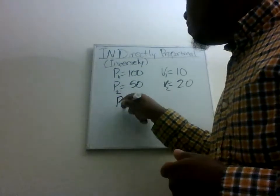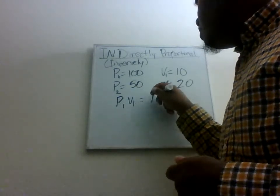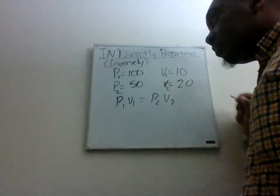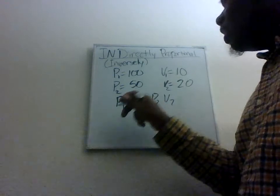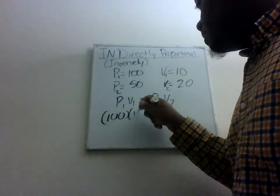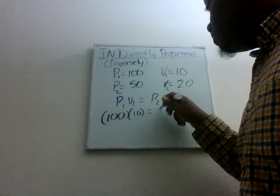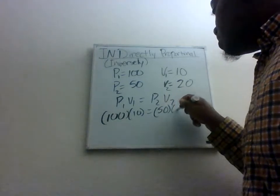So we're going to multiply P1 times V1 and see what we get. So when we do 100 times 10, let's see if it equals 50 times 20.